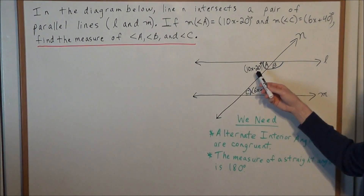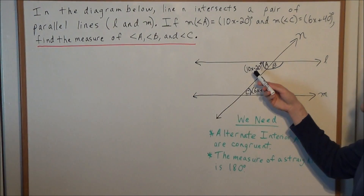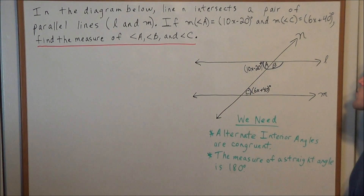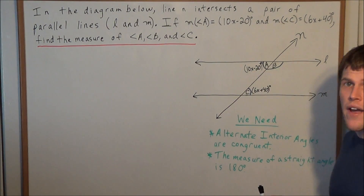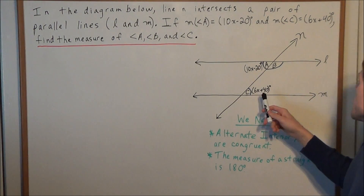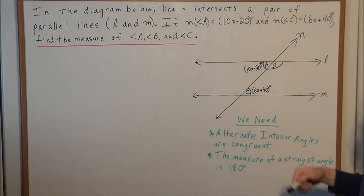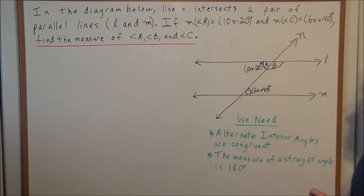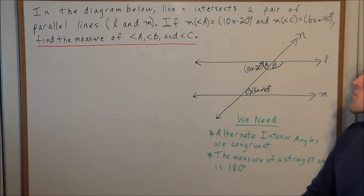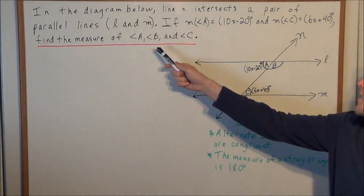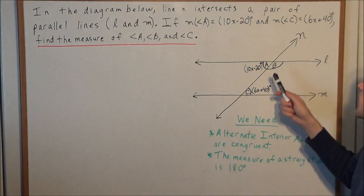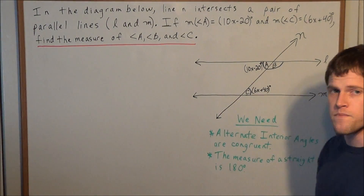If the measure of angle A is 10x minus 20 degrees and the measure of angle C is 6x plus 40 degrees, find the measure of angle A, angle B, and angle C.